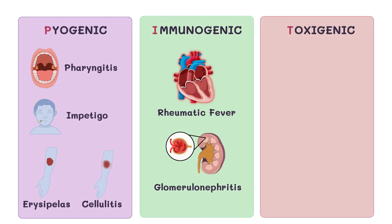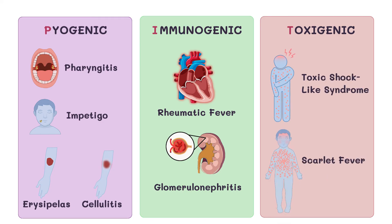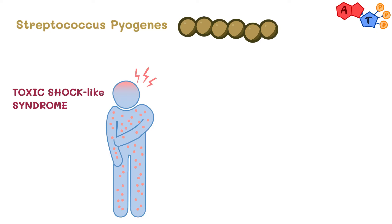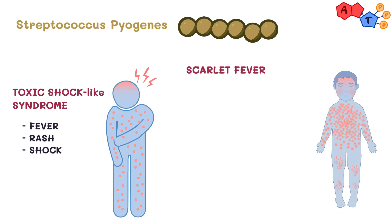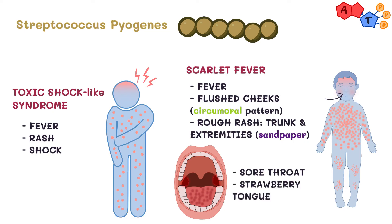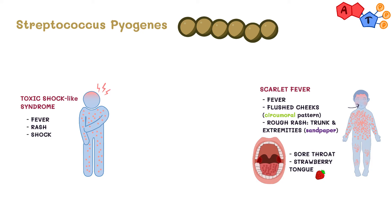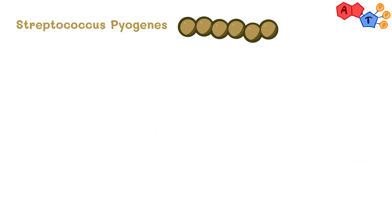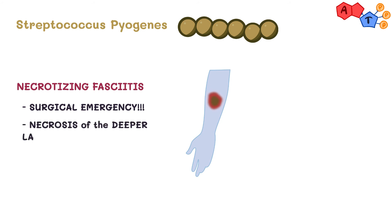Lastly, the toxigenic category includes toxic shock-like syndrome and scarlet fever. Toxic shock-like syndrome is a serious condition which can lead to fever, rash, and shock. Scarlet fever results in three main problems: skin and mucous membrane involvement, plus fever. For the skin, it causes flushed cheeks but spares the area around the mouth — a pattern known as circumoral pallor — plus a rough sandpaper-like rash on the trunk and extremities. For the mucous membranes, it causes sore throat and strawberry tongue. Both toxigenic diseases are caused by erythrogenic exotoxin A. Additionally, necrotizing fasciitis is also classified under toxigenic and is a surgical emergency — it causes necrosis of the deeper layers of the skin and may be accompanied by crepitus and bullae formation.